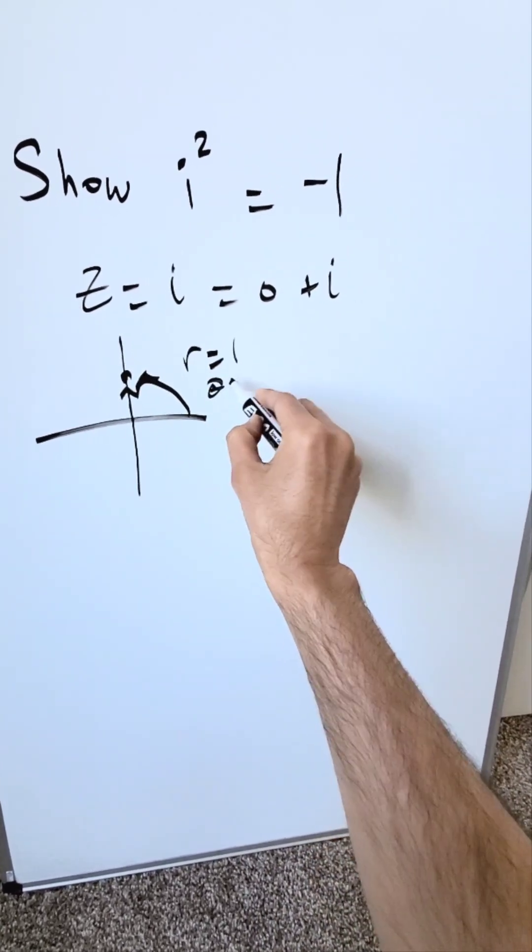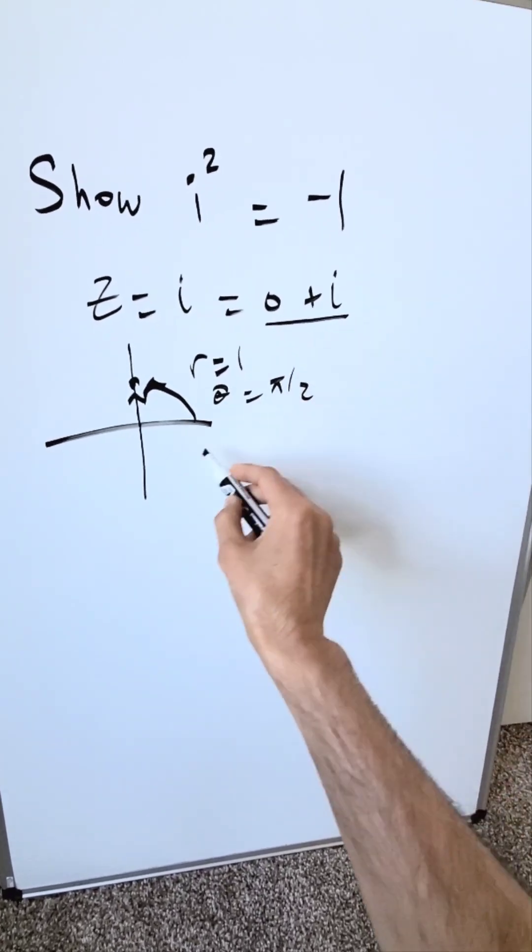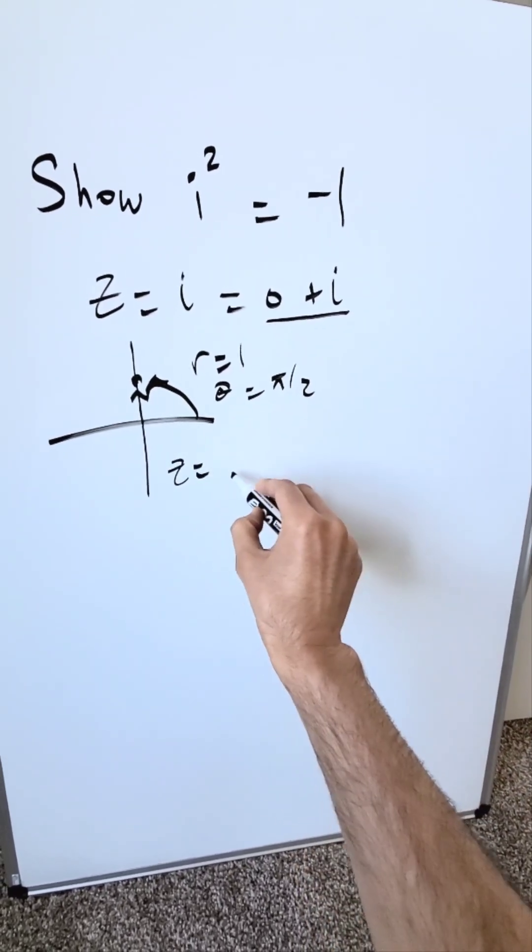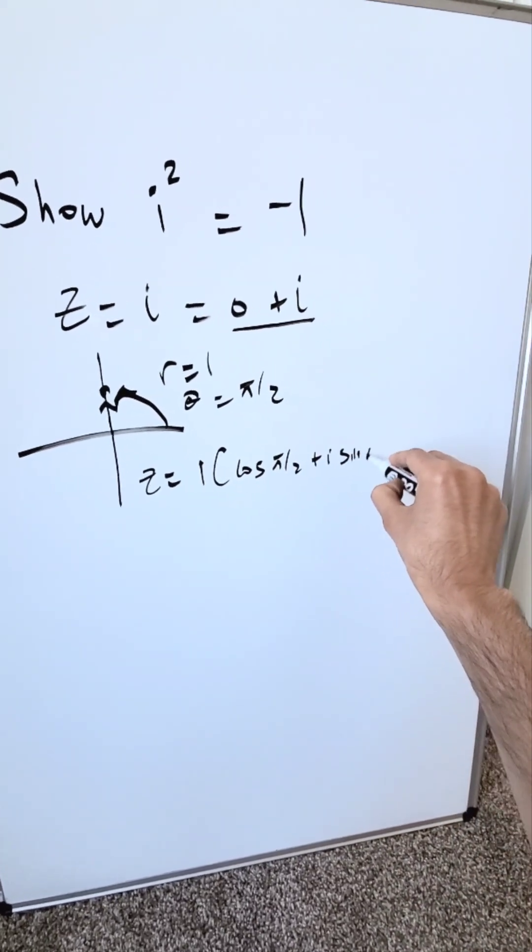Your angle right here from your horizontal is equal to pi over 2. When you put this right here in a polar trigonometric form, you're looking at z is equal to 1. You have cosine pi over 2 plus i sine pi over 2.